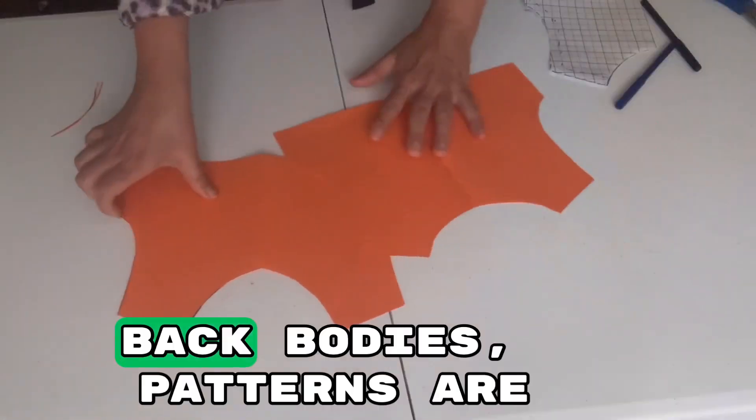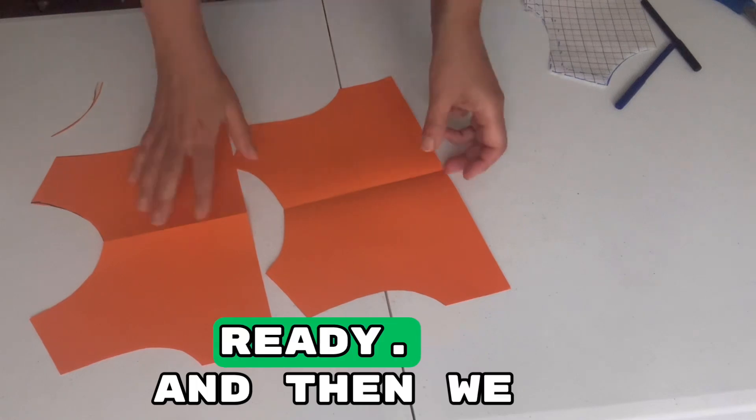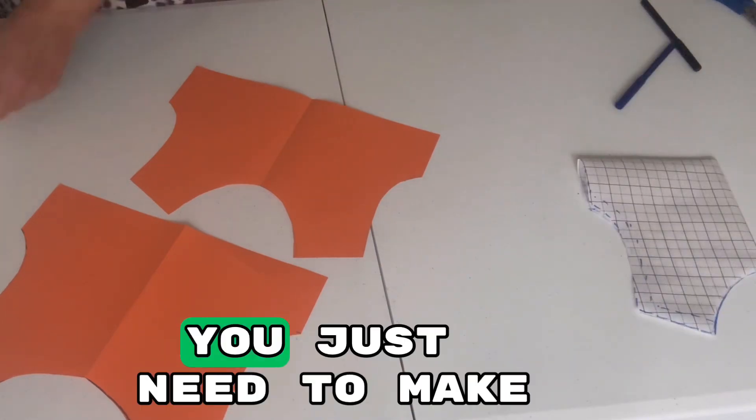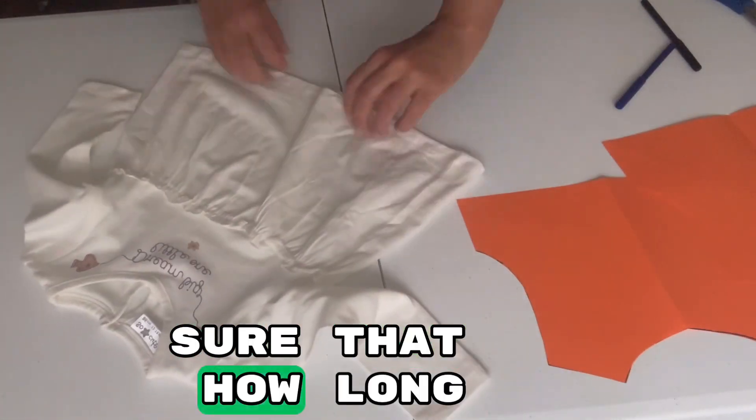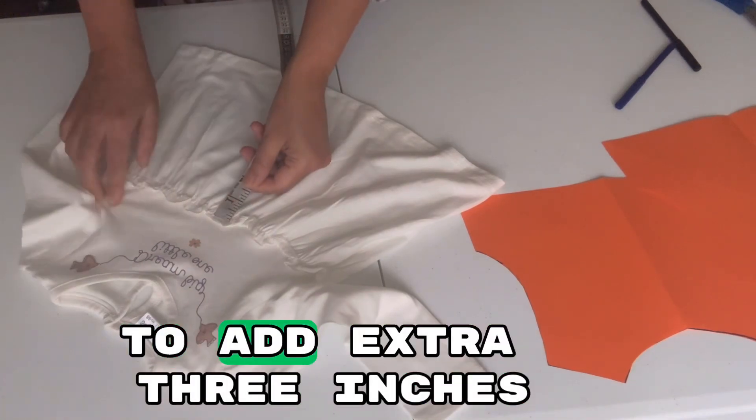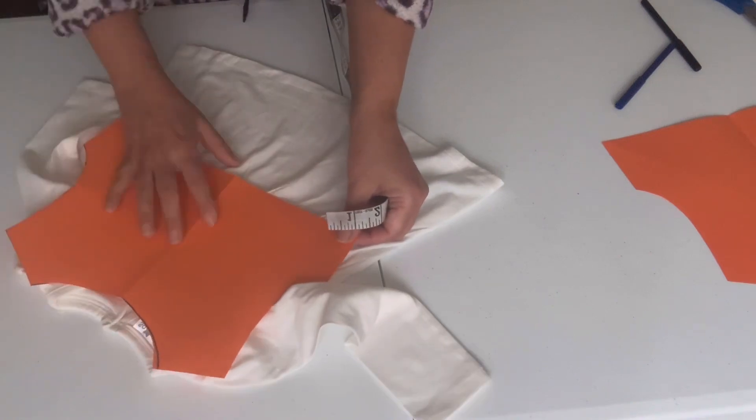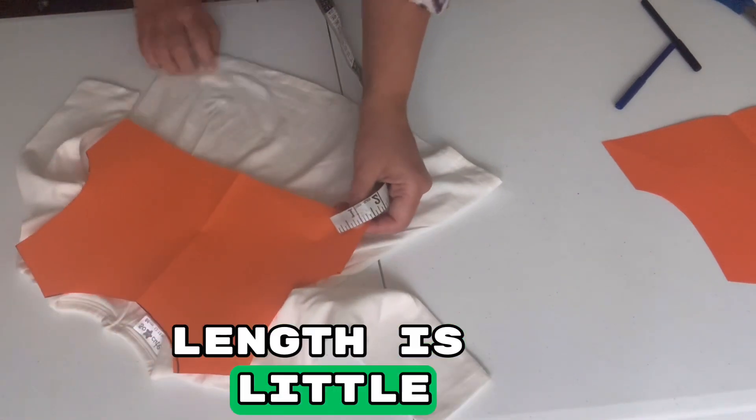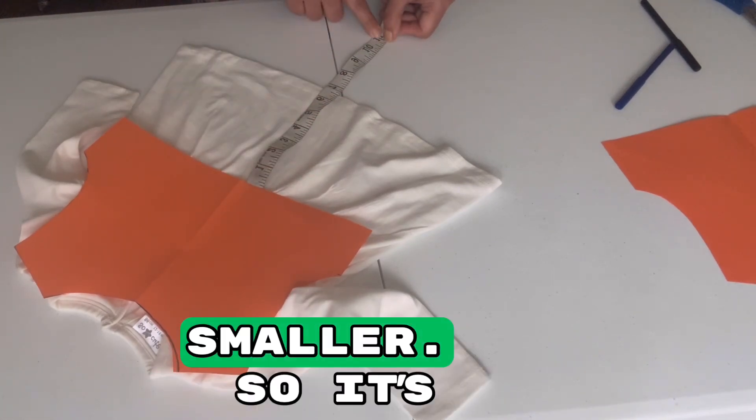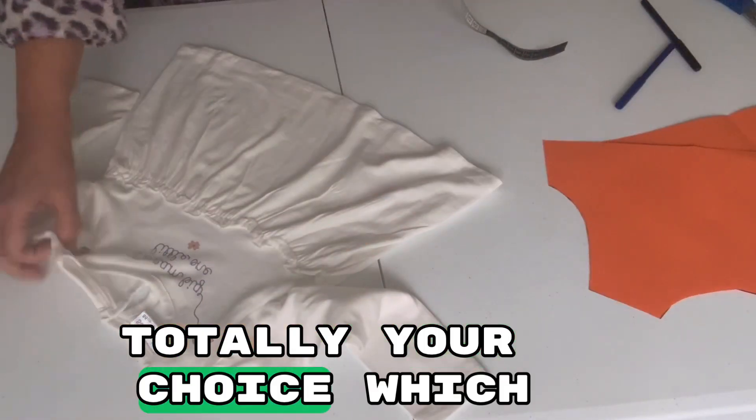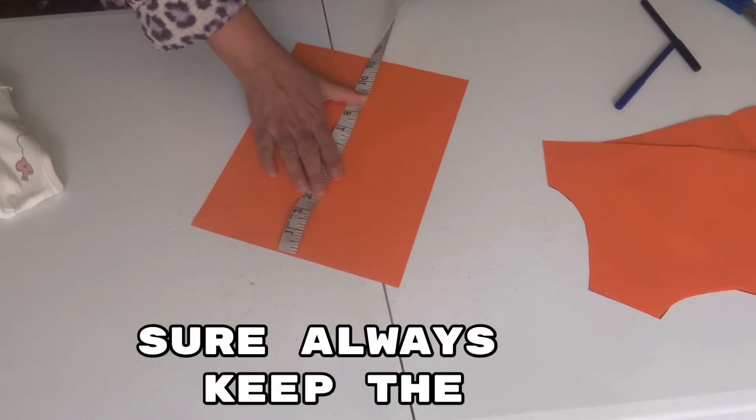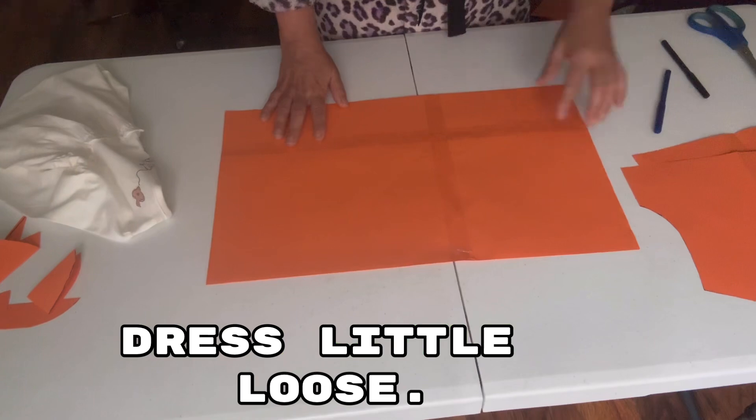This is our front and back bodice patterns ready. Then we will be simply adding a skirt. For adding a skirt, as I mentioned, you just need to make sure how long of a dress you want to make. As I mentioned, I am going to add extra three inches in length because this length is a little smaller. It's totally your choice which type of top or dress you want to make for the baby. Make sure to always keep the dress a little loose.